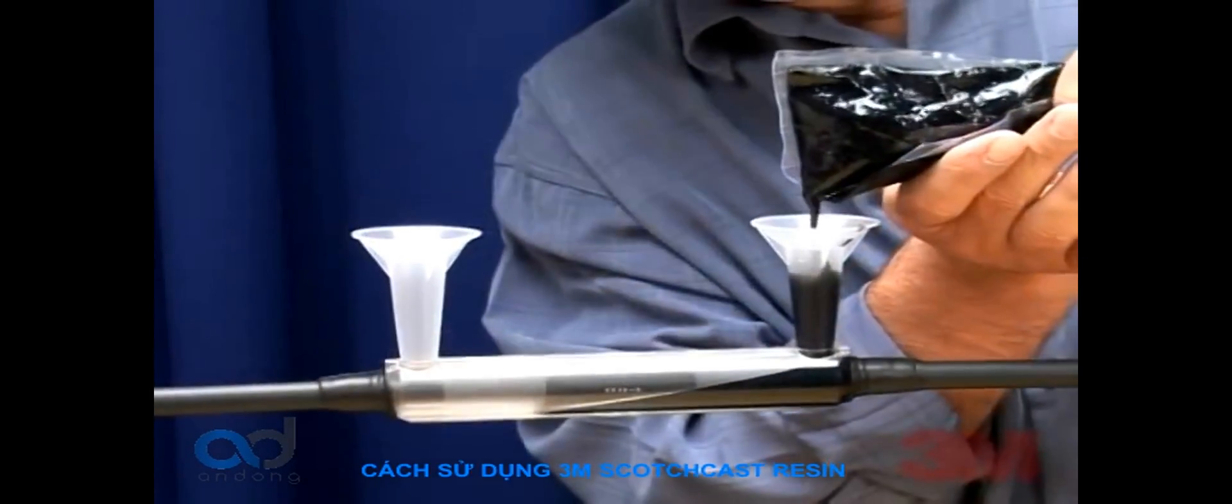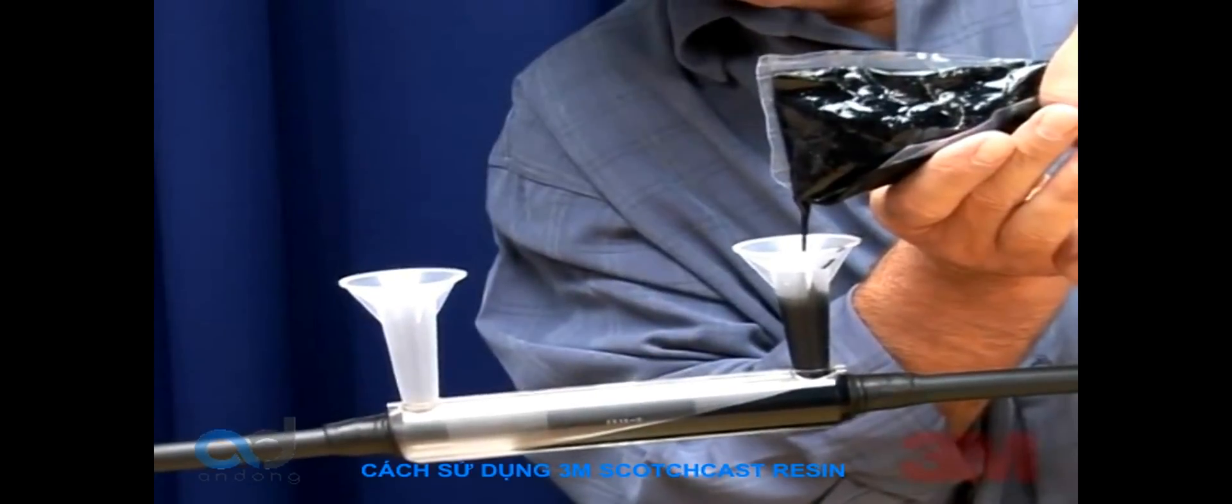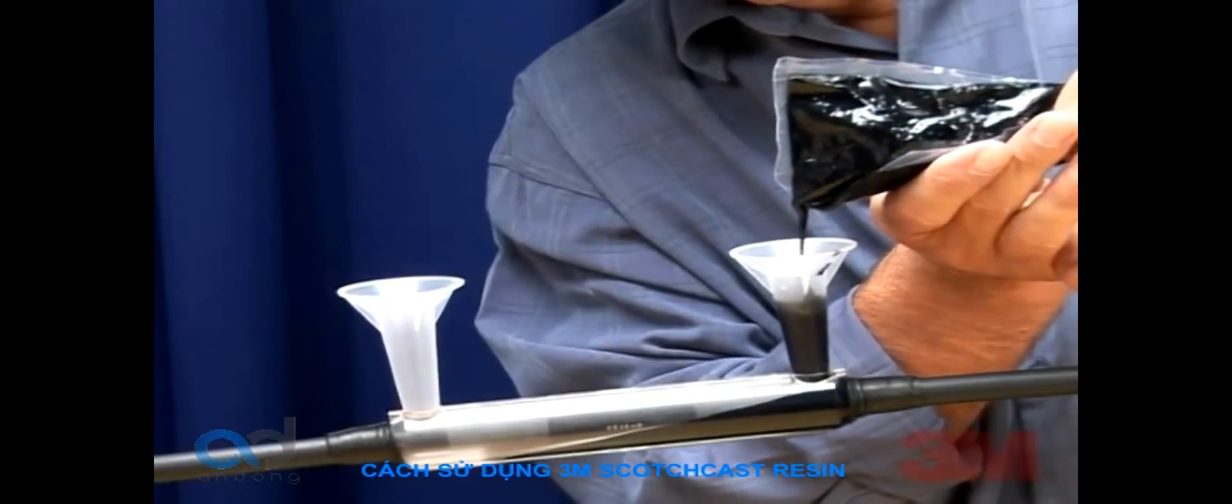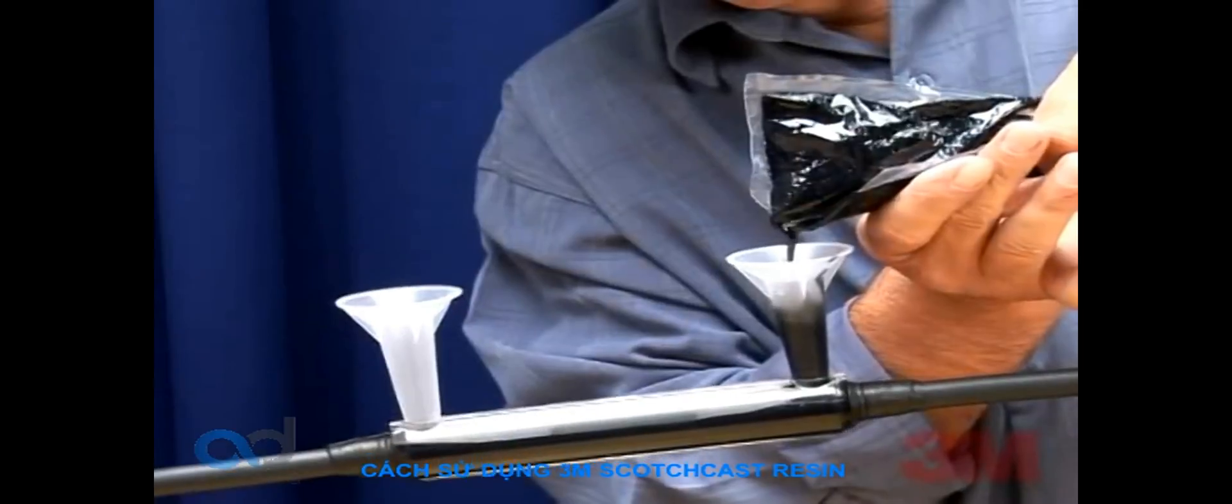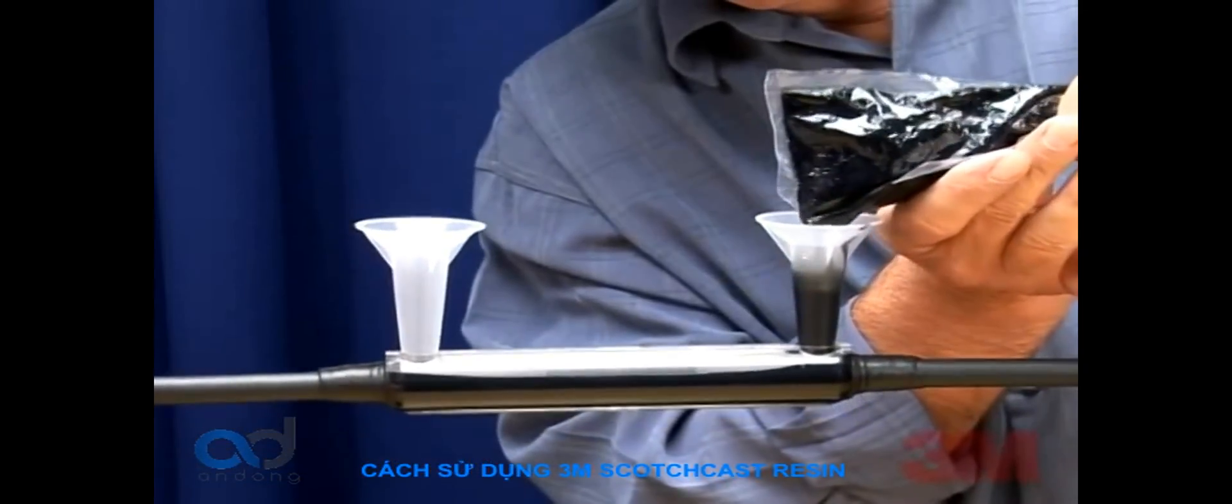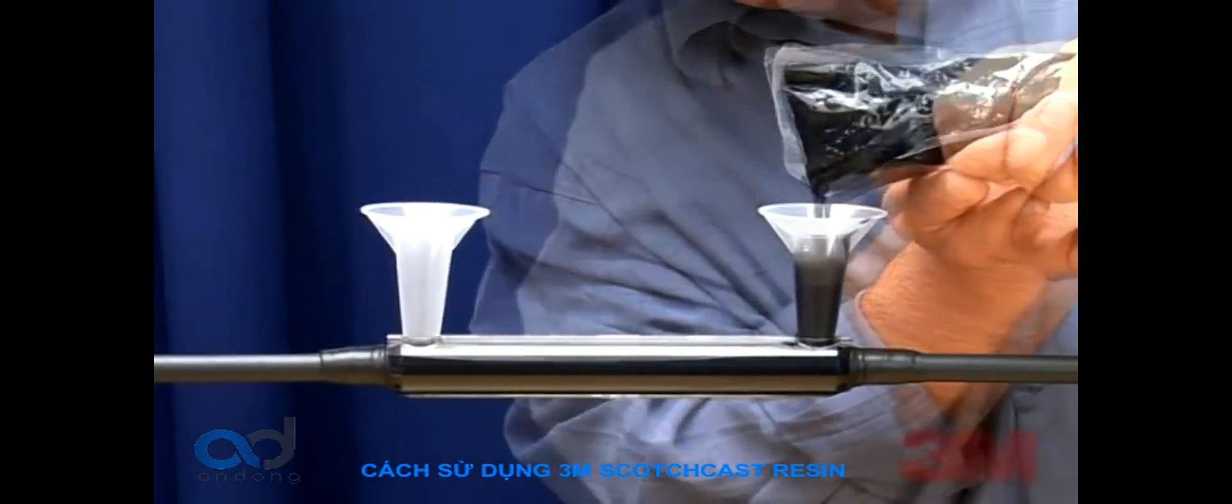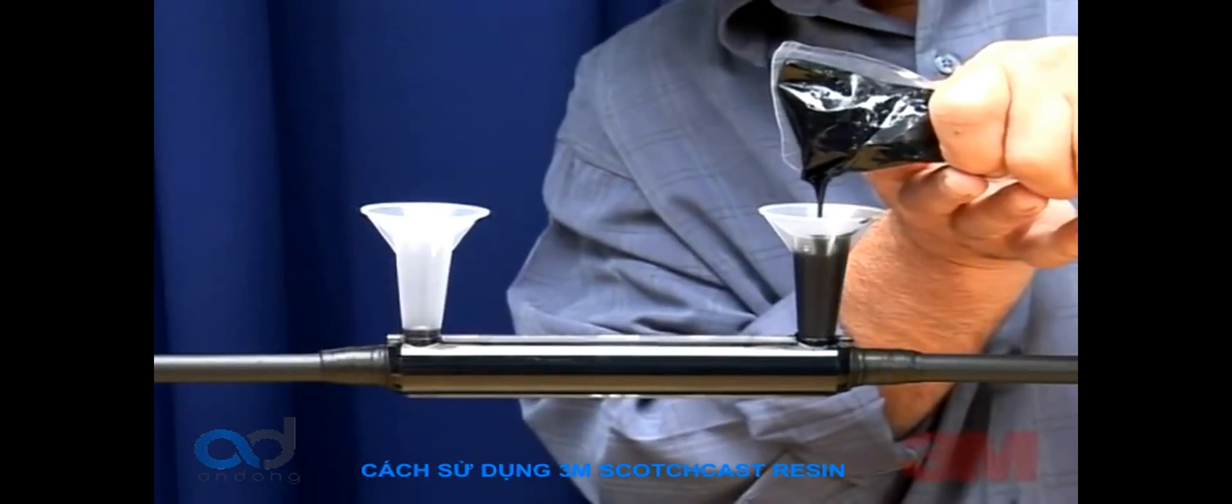When the resin has solidified and cooled, the splice may be put into service. A helpful hint: tilt the splice slightly and pour resin in the downhill side spout if area permits. This will push the resin to the raised end spout pushing excess air from the splice.